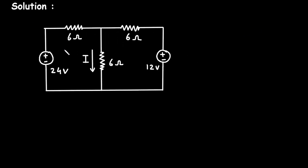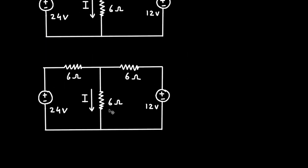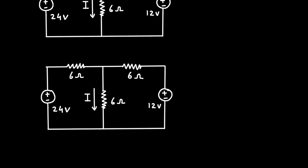First of all, here we can see there are two voltage sources. What we will do is convert this voltage source and this voltage source into equivalent current sources. To convert a voltage source into a current source, we have to use Ohm's law. Currently this 6 ohm is in series with this 24 volt, so let's convert this.